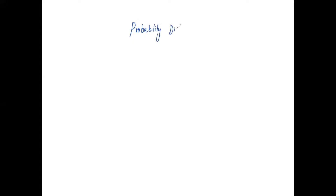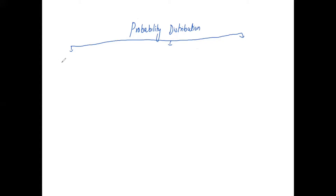This is a very important chapter in Applied Statistics. We are going to discuss a basic outline of the probability distribution. The first one is the binomial distribution, the second one is the Poisson distribution, and the third one is the normal distribution.